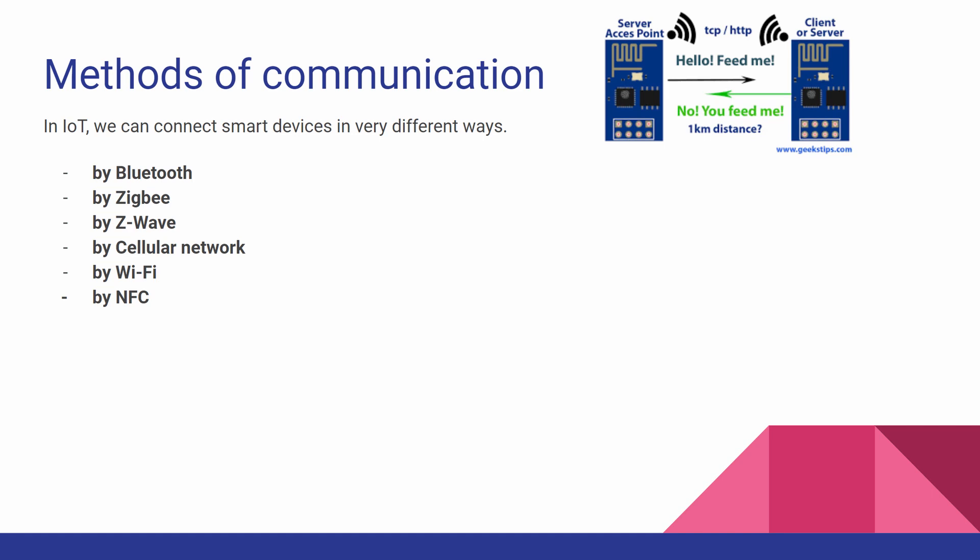In IoT we can connect smart devices in very different ways. For example, by Bluetooth, which can be used at short range; by Zigbee, which is pretty similar to Bluetooth; by Z-Wave; by cellular network, which can be used for longer distance communication; by Wi-Fi, the most popular method of connecting IoT devices; and by NFC for extremely short distances of less than 4 cm.